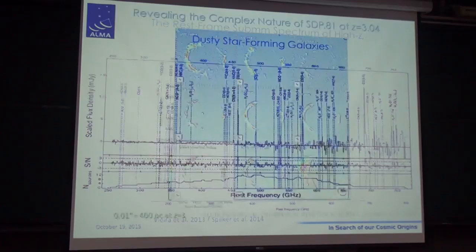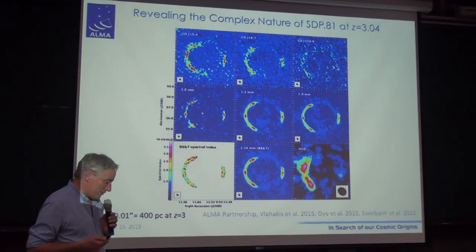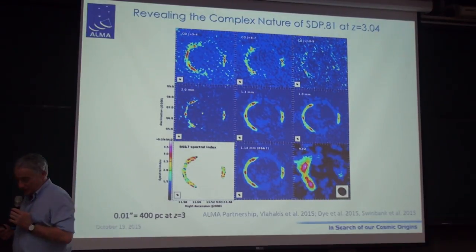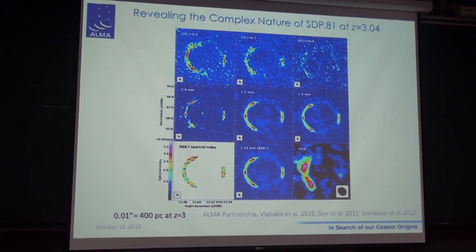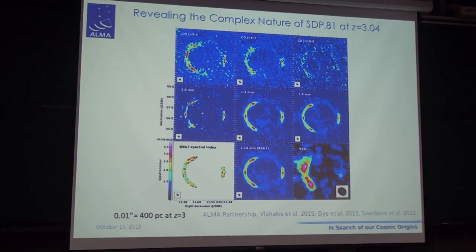My favorite object — I missed it — is the Einstein ring, shown a few slides before: SPT81, which is at a redshift of 3.04, corresponding to an age of the universe which is about 15% of the current age. The ring was detected very well, including the detection of the foreground lensing galaxy, and different transitions of CO, and notably also in water — one of the fundamental water transitions.